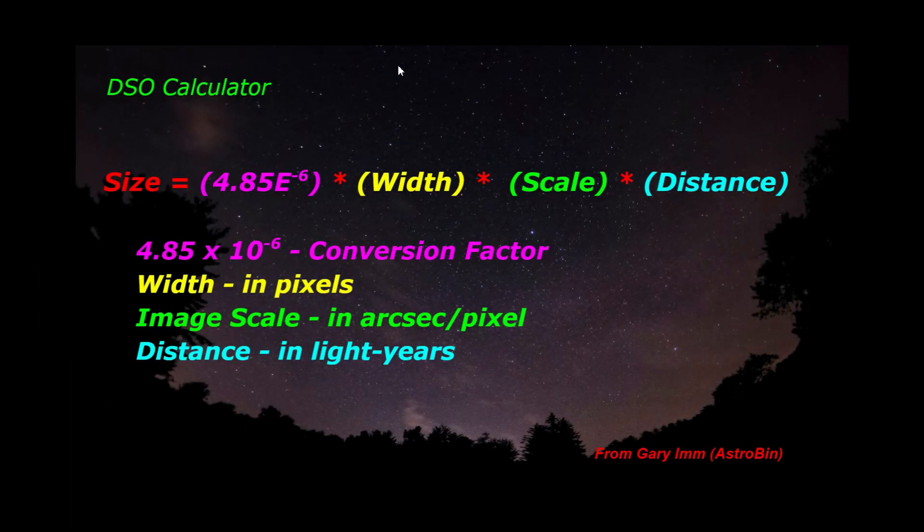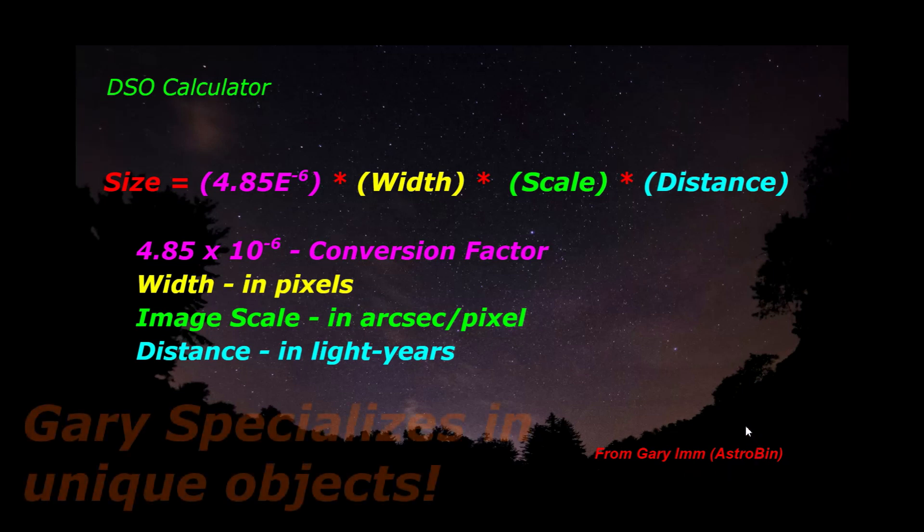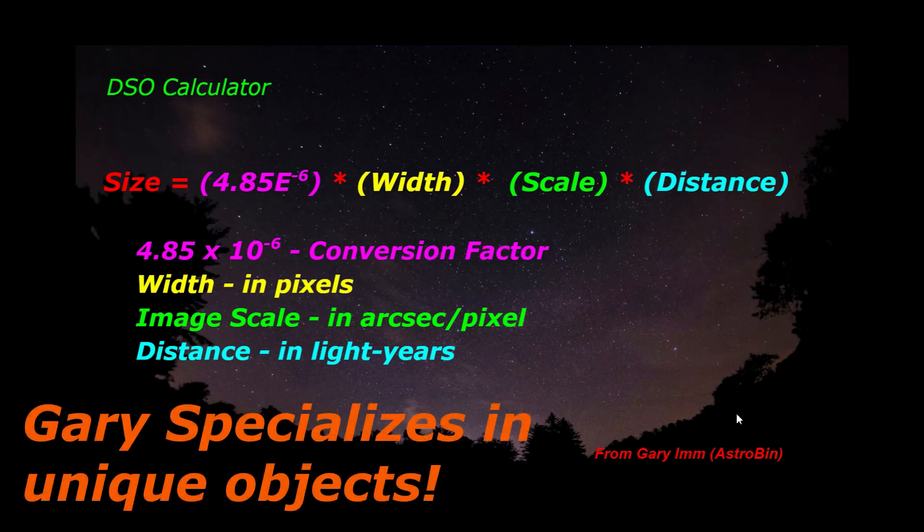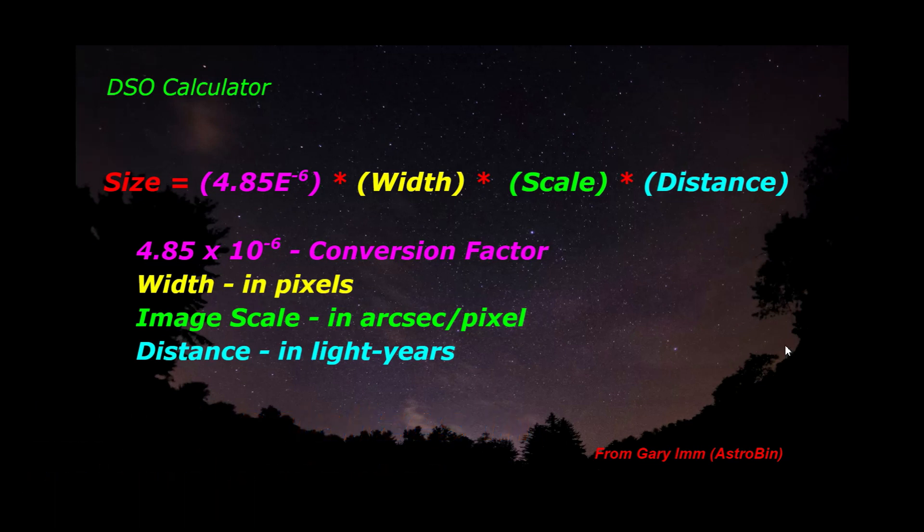Hello everyone. So here's this deep sky object calculator that I was talking about. Your size is equal to this 4.85 conversion factor times the width in pixels times the image scale in arc seconds per pixel multiplied by the distance. And this formula came to me from Gary Im on Astrobin, and he uses it a lot for his objects that he images, because most of those things are very obscure objects that don't have the size already calculated. And I don't know where exactly he got this formula from. I think he mentioned he got it from the internet as well.